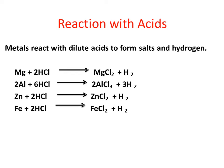Reaction of metals with acids. Metals react with acids to form salts and hydrogen. For example, magnesium reacts with hydrochloric acid to give magnesium chloride, which is a salt, and at the same time there is release of hydrogen gas. Similarly, zinc reacts with hydrochloric acid and gives zinc chloride and hydrogen gas.